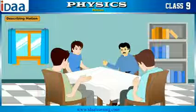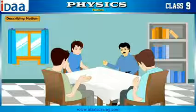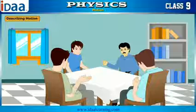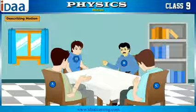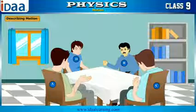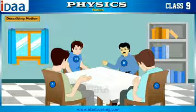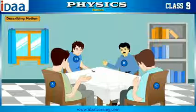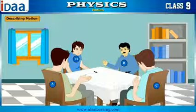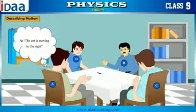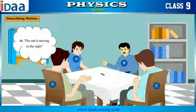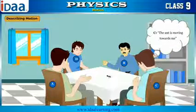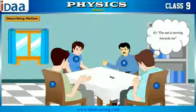Four friends are sitting around a table with one person on each side. Let us call them A, B, C, and D. The table cloth placed on the table is white and has no markings. An ant has been placed by one of the friends and it started moving from that position. A says the ant is moving to the right. B says the ant is moving to the left. C says the ant is moving towards me, and D says the ant is moving away from me.